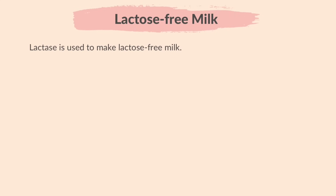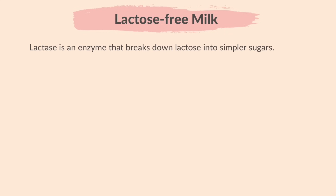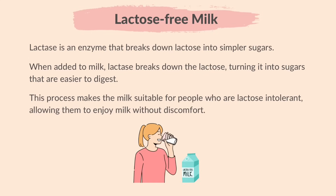Next, lactose-free milk. Lactase is used to make lactose-free milk. Lactose is a natural sugar found in milk, but some people can't digest it well — they are lactose intolerant. Lactose intolerant people might experience tummy troubles like bloating, gas, and stomach ache after eating dairy foods. Lactase is an enzyme that breaks down lactose into simpler sugars. When added to milk, lactase breaks down the lactose, turning it into sugars that are easier to digest. This process makes the milk suitable for people who are lactose intolerant, allowing them to enjoy milk without discomfort.